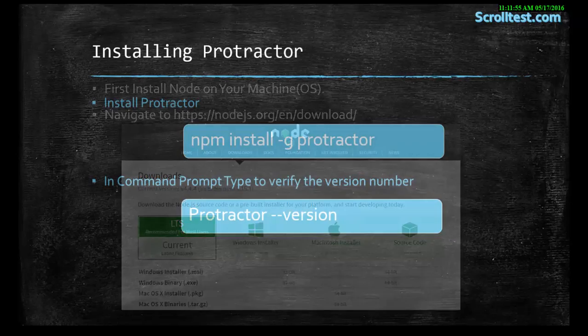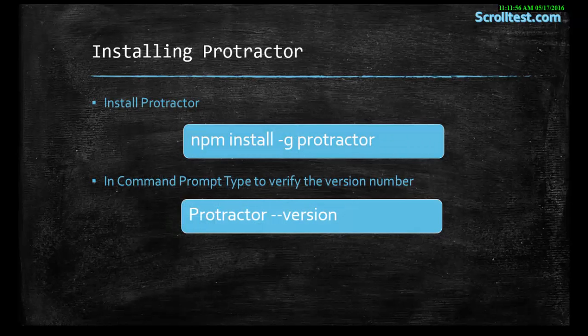The next part will be installing the Node package of Protractor on your local machine. After installing Node.js, I also recommend installing Java JDK before that. If you don't know about Java JDK, I will show you the URL — you can go to oracle.com and search for Java JDK and install according to your version.